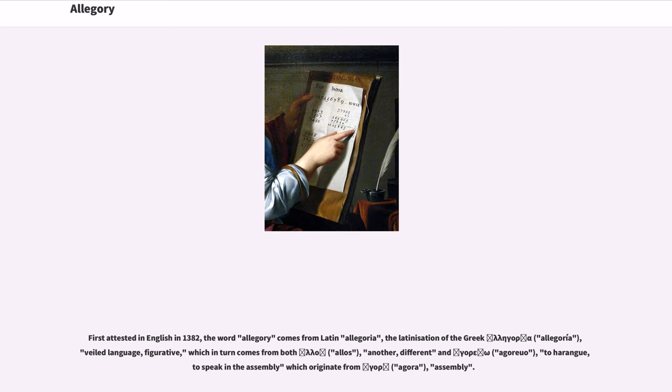First attested in English in 1382, the word allegory comes from Latin allegoria, the Latinization of the Greek allegoria, meaning veiled language or figurative speech.